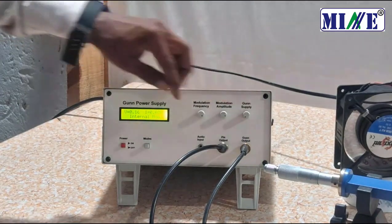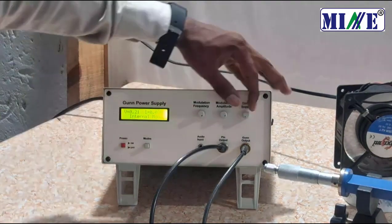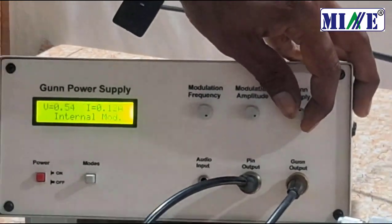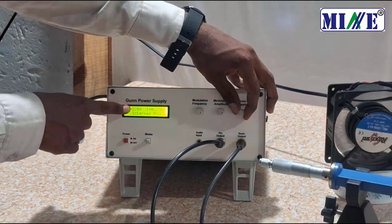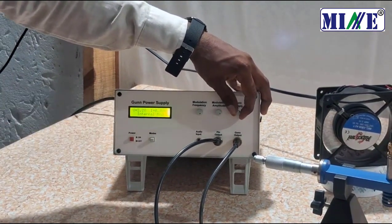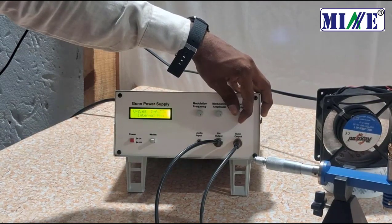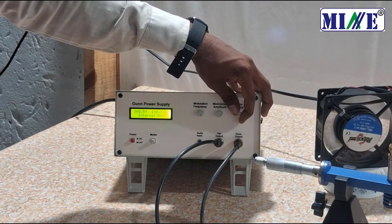Rotate the gun supply knob in a clockwise direction. Set 9 volts for safety purposes.